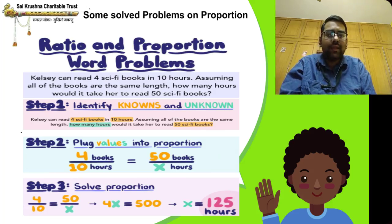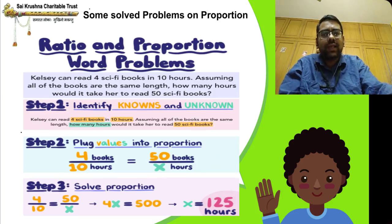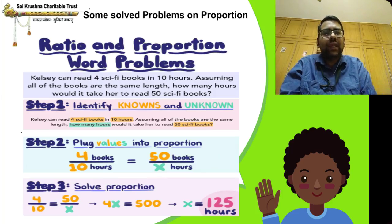We will divide by 4 on both sides, because you have to divide both sides by the number which is attached to the variable. Here 4 is attached to variable x, so divide both sides by 4.